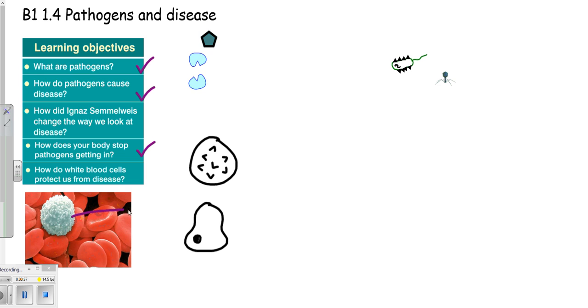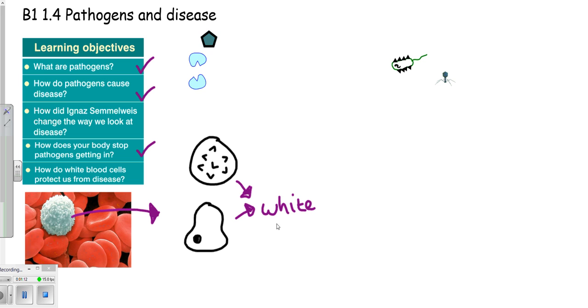Let's take a look at our white blood cell. This here is a white blood cell, and he is in amongst some red blood cells there. What is a white blood cell? Well, a white blood cell is a specialized cell, and they roam around our body searching for pathogens, and when they find them, they will attempt to destroy them or protect our body from disease. They do come in different shapes and sizes, so it's important to know that these are white blood cells.